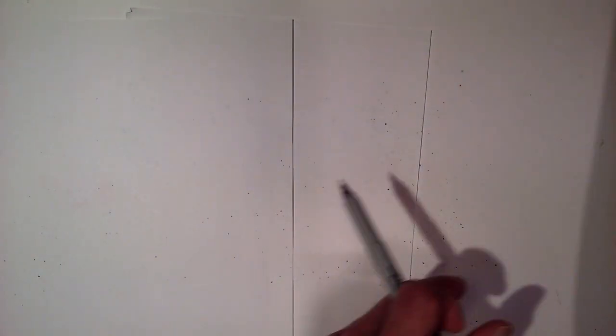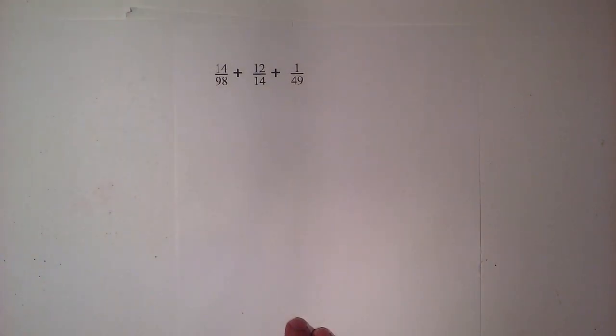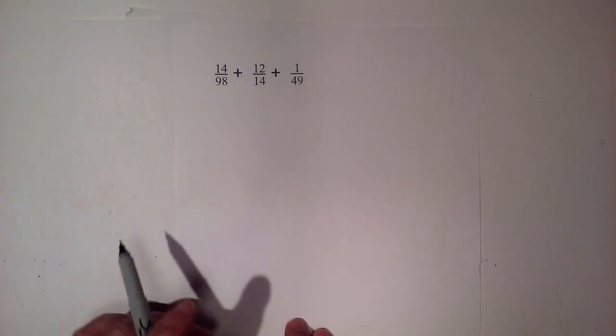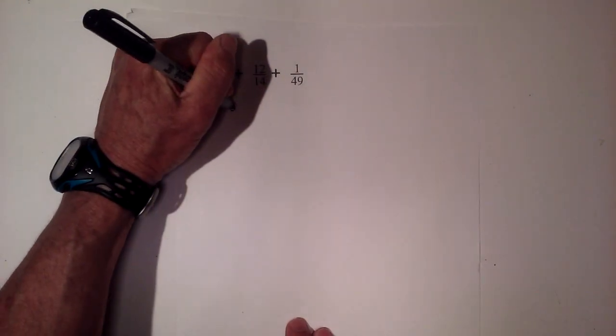So now let's do one even more challenging just to show you that you really can find the lowest common denominator for any of these numbers. And here's what we have. We have 98, 14, and 49. I'm going to do the very same thing.